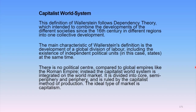The capitalist world system is integrated on the world market, which is divided into three forms, three spaces, three ideologies, three economic structures: namely the core, the semi-periphery, and the periphery. It is ruled by the capitalist method of production, whether in developed countries, developing countries, or absolutely underdeveloped countries. The ideal type of market in the present-day world is capitalism.